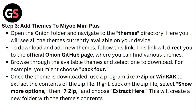Browse through the available themes and select one to download — for example, you might choose Pack 4. Once the theme is downloaded, use a program like 7-Zip or WinRAR to extract the contents of the zip file. Right-click on the zip file, select 'Show more options', then '7-Zip', and choose 'Extract here'. This will create a new folder with the theme's content.